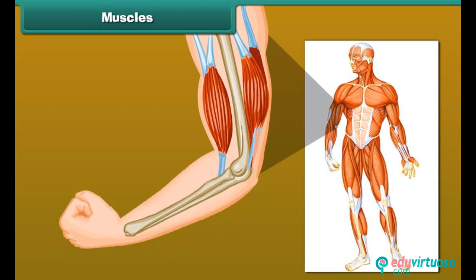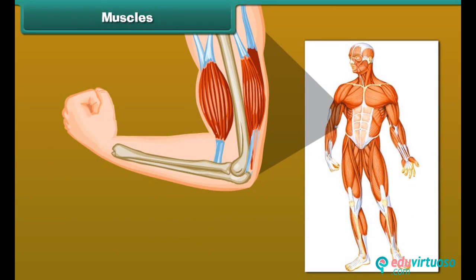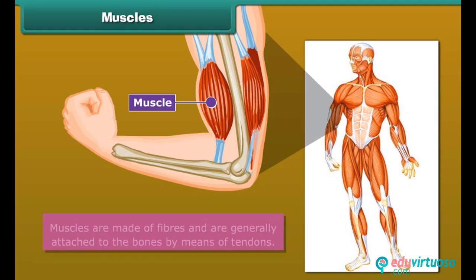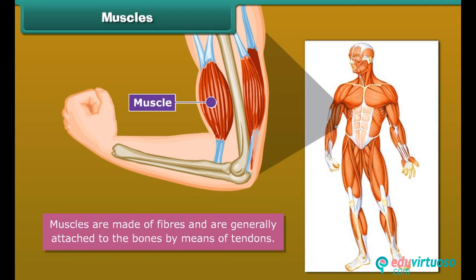Make a tight fist and bend your arm at the elbow — feel your upper arm. It feels harder. This is called the biceps. The biceps are muscles. There are about 600 muscles present in an adult human body. Muscles are made of fibers and are generally attached to the bones by means of tendons.